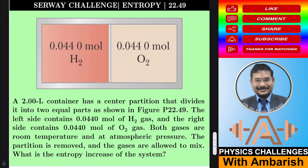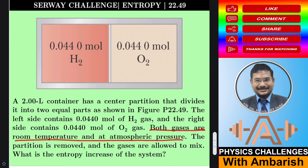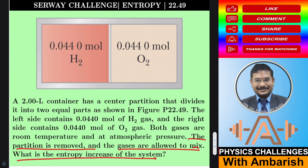Now let's look at today's challenge — a problem from Young and Freedman's University Physics. A two-liter container has a center partition dividing it into two equal parts. The left side contains 0.0440 mol of hydrogen gas and the right side contains 0.0440 mol of oxygen gas. Both gases are at room temperature and atmospheric pressure. The partition is removed and the gases mix. What is the entropy increase of the system?